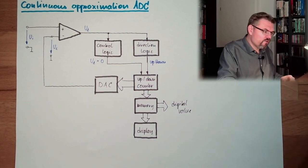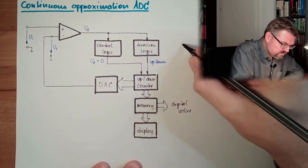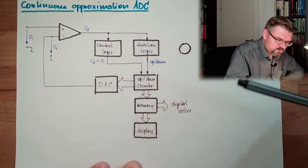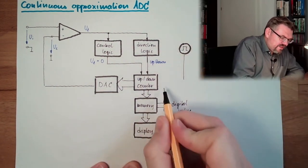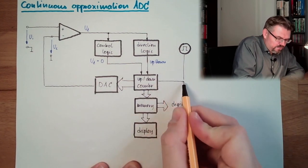Of course, again we have an oscillator. This oscillator is giving the ticks this counter is counting up or down.